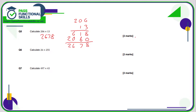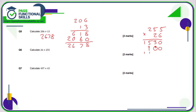Question 6: 255 on the top and 26 on the bottom. 6 fives are 30, 0 carry 3; 6 fives are 30 plus 3 is 33; 6 twos are 12, plus 3 is 15. Moving on to the 2 of 20, put in a 0: 2 fives are 10, 0 carry 1; 2 fives are 10 plus 1 is 11, carry 1; 2 twos are 4 plus 1 is 5. Adding together, the answer is 6630.